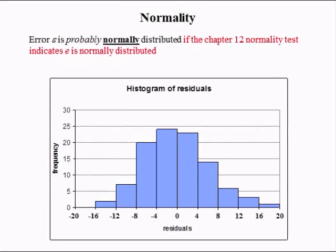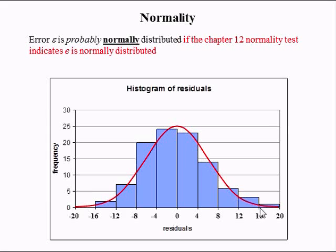The third assumption that needs to be verified is that the errors are normally distributed. The error is probably normally distributed if the Chapter 12 normality test indicates the residual is normally distributed. The intuition behind this test is that the histogram of the residuals, or the estimated errors, follows a normal distribution. Graphically, what you want to see is this red normal distribution curve passing through the flat section of each bar.